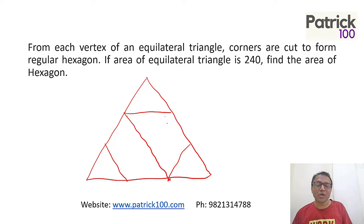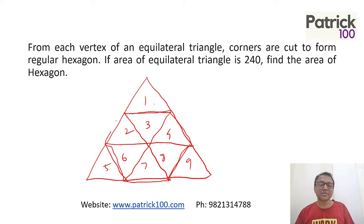If I draw it like this, breaking up the hexagon into equilateral triangles - the whole triangle is formed of 9 smaller equilateral triangles, from which the hexagon forms 6 equilateral triangles. Which means 9 equilateral triangles stands for area of 240. So 6 equilateral triangles will be 6 upon 9 into 240. We'll get the answer 160, basically 2/3.